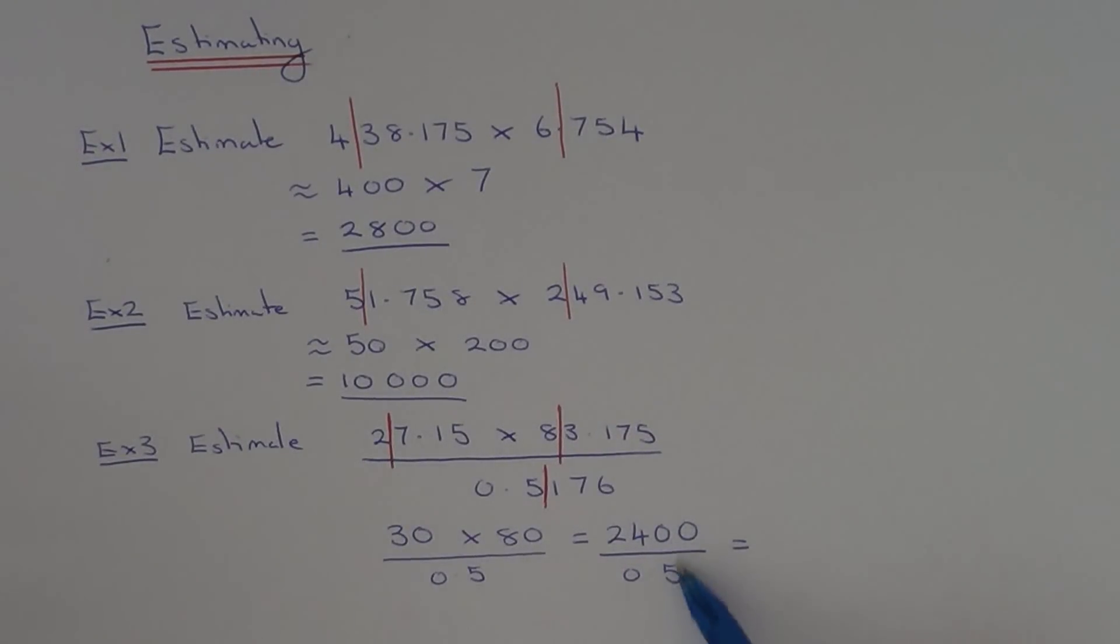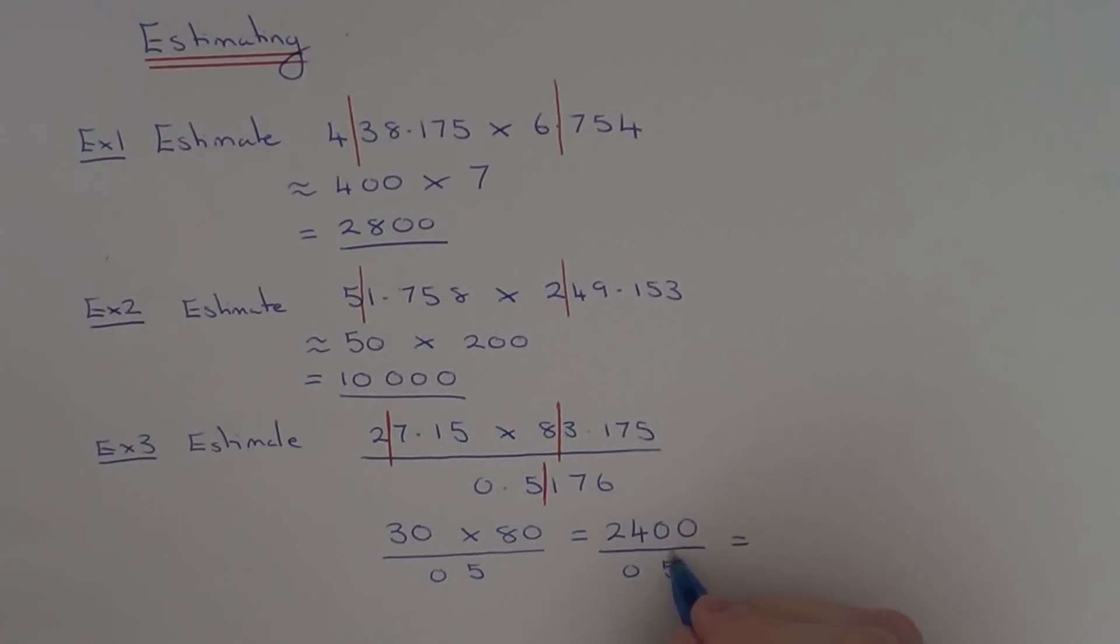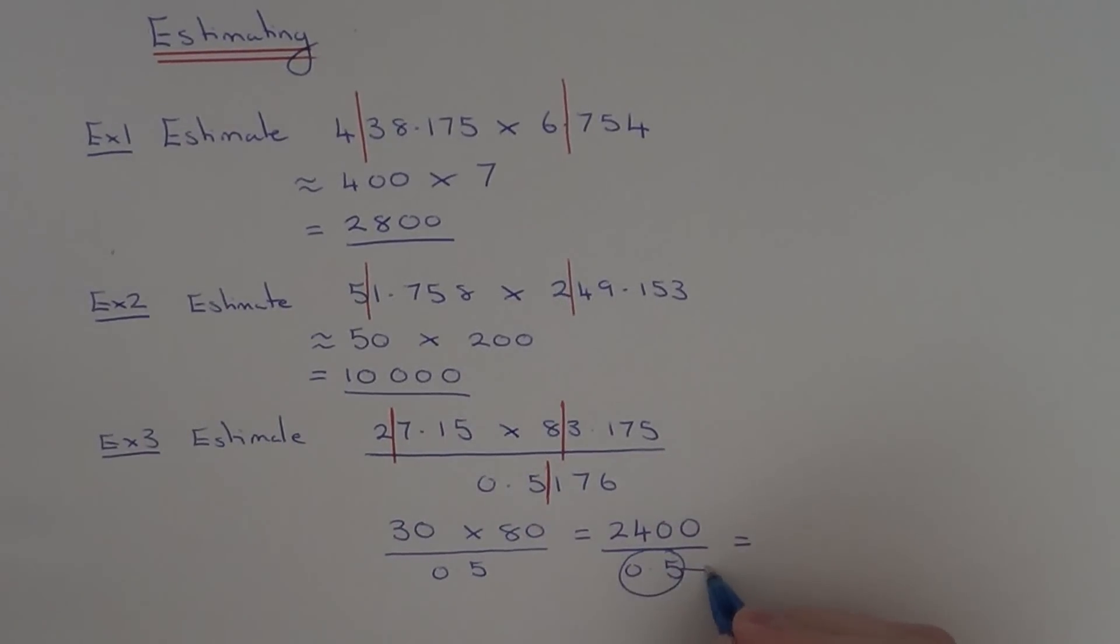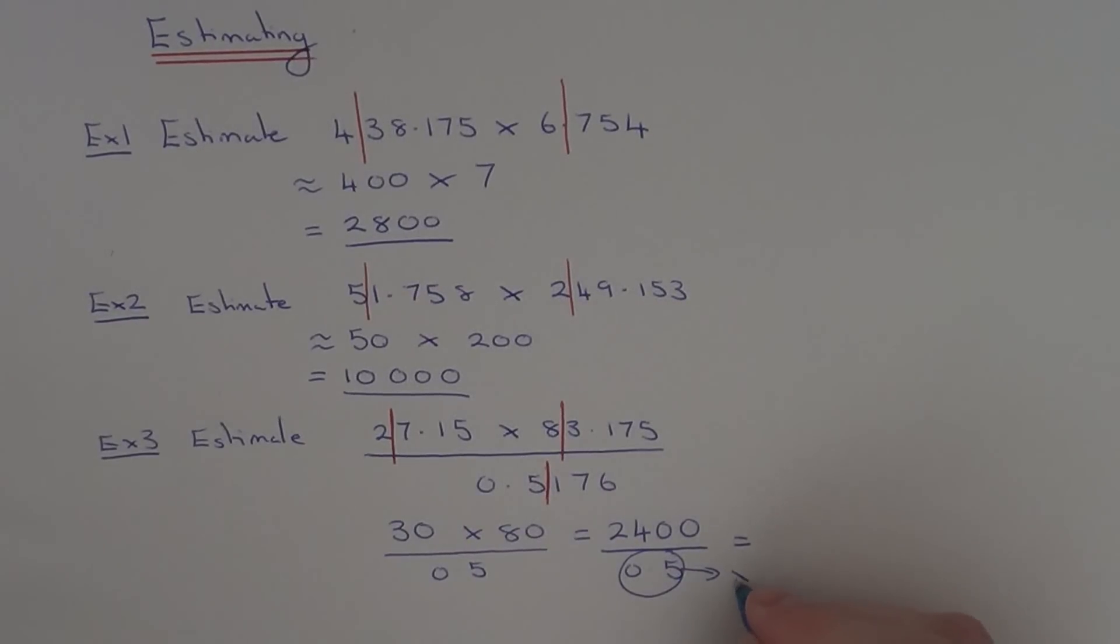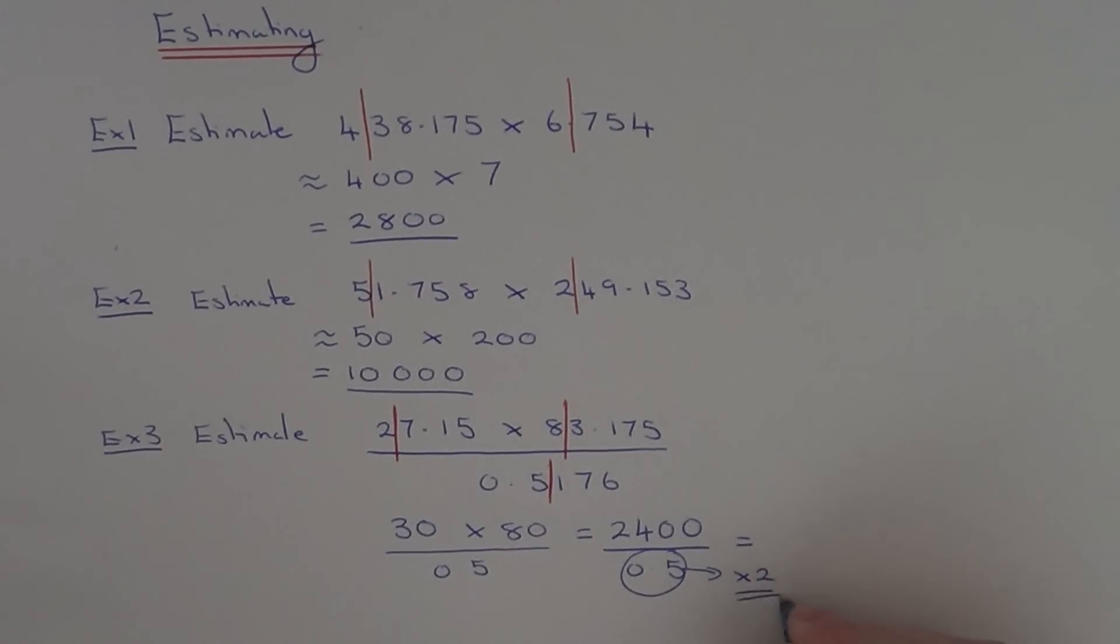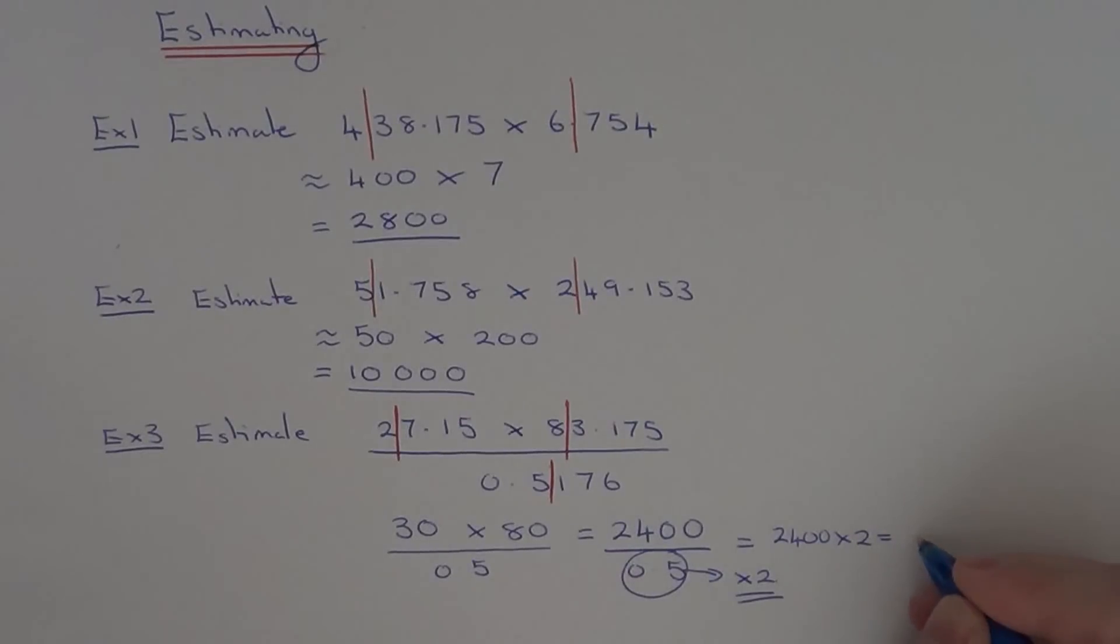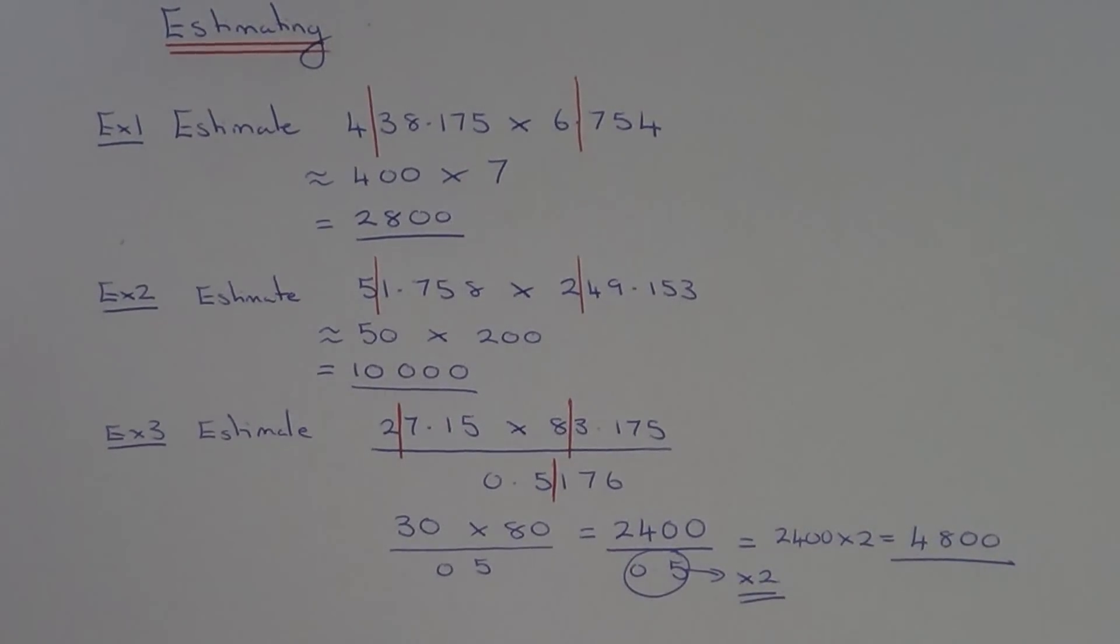Right, so we have a little bit of a tricky calculation here because you have to divide 2400 by 0.5. Now you might remember that dividing by 0.5 is the same as multiplying by 2. So all you need to do is work out 2400 times 2, which will give you an answer of 4800.